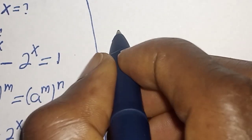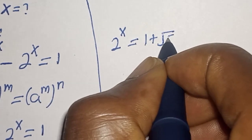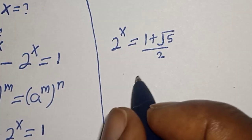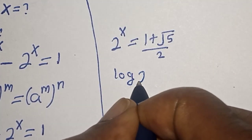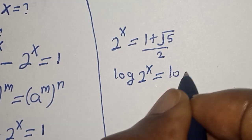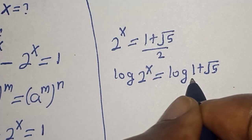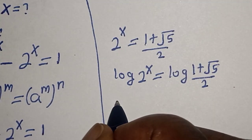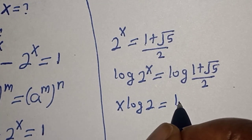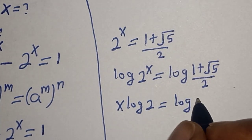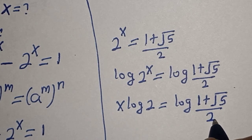2 to the power of x is equal to 1 plus root 5 over 2, which is also the golden ratio. Now let's take the log of both sides. This gives log of 2 to the power of x is equal to log of 1 plus root 5 over 2. Then we have x times log 2 is equal to log of 1 plus root 5 over 2.